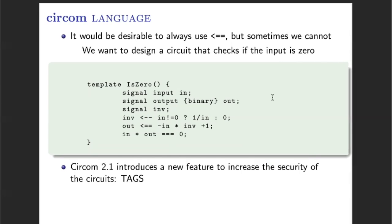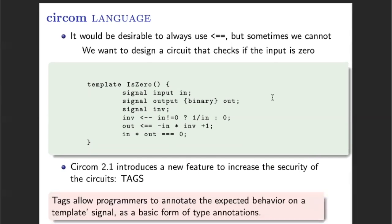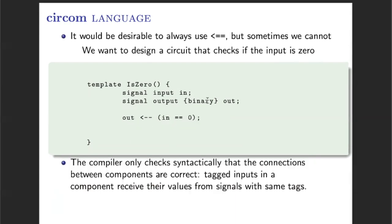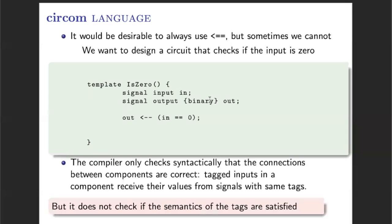The newest version of CIRCOM has included the use of tags in order to try to enhance the security of their circuits. Tags are annotations that users may include in order to indicate what are the expected properties that the signals of the circuit have to satisfy. For example, in this case, we are stating that we expect the output of the circuit to have a binary value, either zero or one. However, the CIRCOM compiler only performs syntactic checks over these tags, meaning that if an input signal has a tag, then the compiler only checks that it can be assigned to a signal that also contains this tag. The compiler doesn't perform any semantic checks, so solutions that have no constraint actually forcing the output signal to be binary are considered valid.